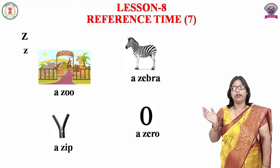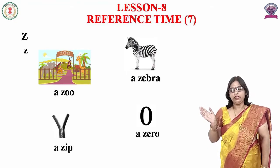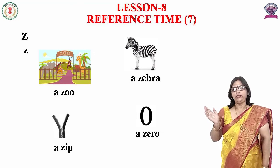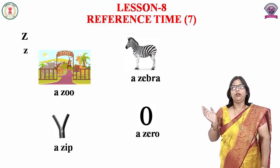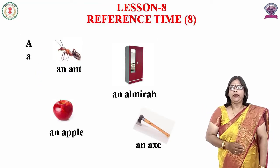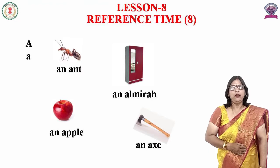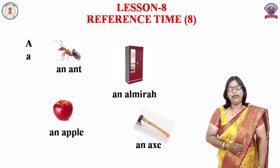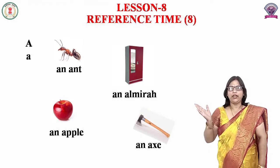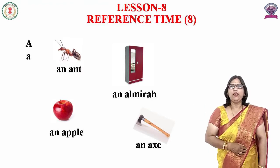Fourth word है zero — Z, E, R, O, zero। Next letter है A। A जो है, vowel है। इसमें नीचे आपको small a दिखाई दे रहा होगा।